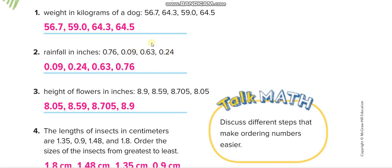For rainfall in inches, the values are 0.09, 0.24, 0.63, and 0.76 — already in least to greatest order. For height of floors in inches, all values have 8 at the ones place. Looking at the tenths and beyond: 9, 5, 7, and 0 — so the order is 8.05, then 8.59, then 8.705, then 8.9.